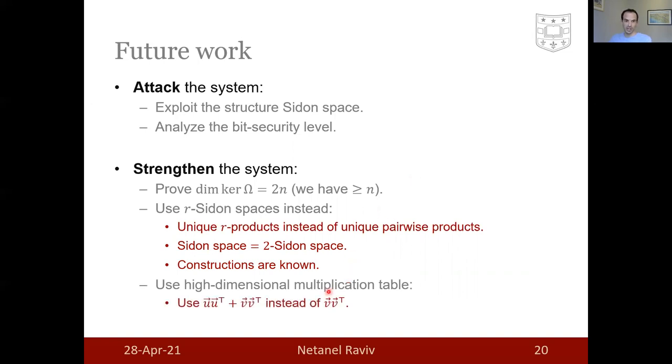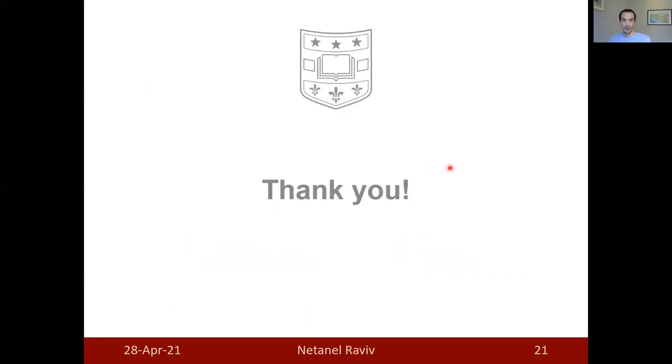Another thing that will strengthen the system is, instead of using one dimensional multiplication table, we can use a 2 or 3 or whatever dimensional multiplication table. Meaning, instead of publishing V V transposed, we publish U U transposed plus V V transposed, meaning the additions of two different multiplication tables. This would result in an attack which is trilinear instead of bilinear, and therefore the resulting system will be more difficult. Thank you for your attention, and I'll be happy to take any questions.